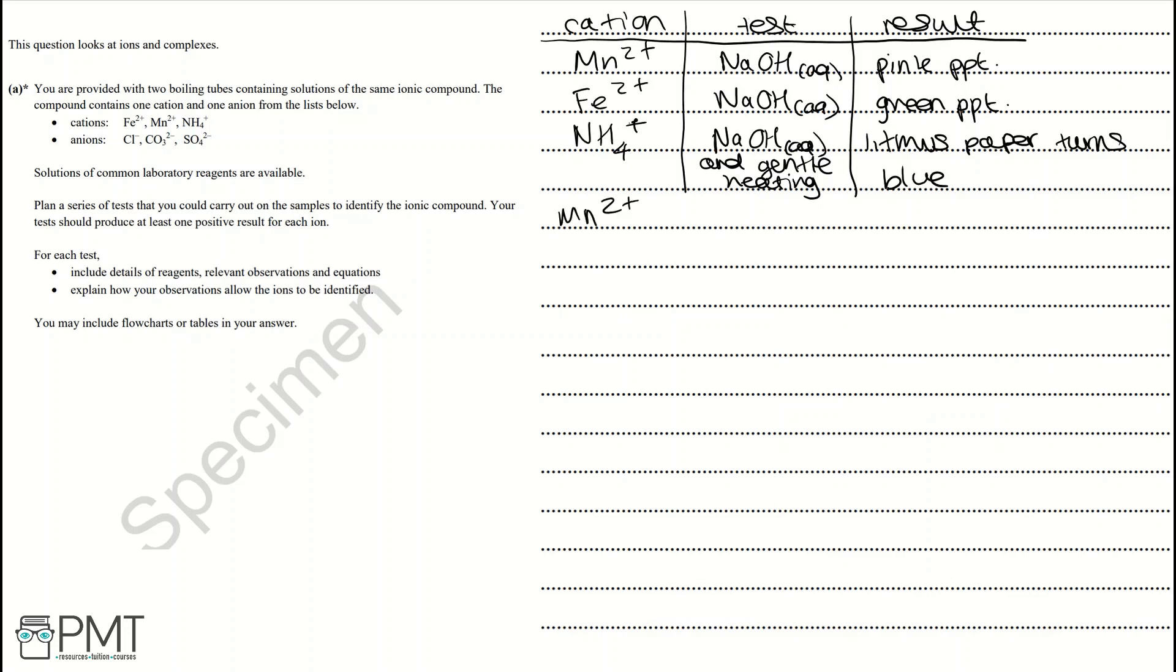Next we need to write the relevant equations for the cation tests. Starting with Mn²⁺, if we're adding two OH⁻ ions from our NaOH, we would then result in Mn(OH)₂. This is the same equation for Fe²⁺: Fe²⁺ plus two OH⁻ goes to Fe(OH)₂. For NH₄⁺, we're adding one OH⁻ ion and that's going to result in us forming NH₃ or ammonia and water.